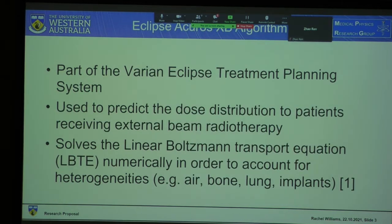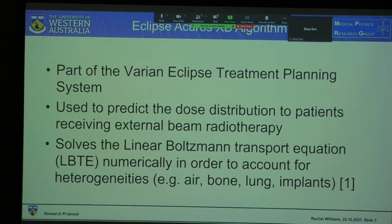The Eclipse Acuros XB algorithm is part of the Varian Eclipse treatment planning system. It's used to predict dose distributions to patients receiving external beam photon radiotherapy, which it does by solving the linear Boltzmann transport equation numerically in order to account for various heterogeneities including air, bone, lung, and implants.